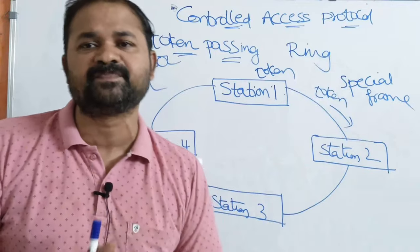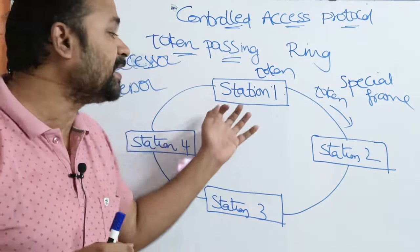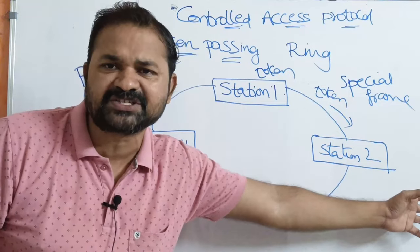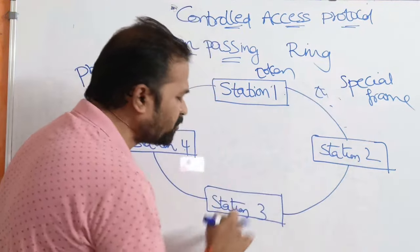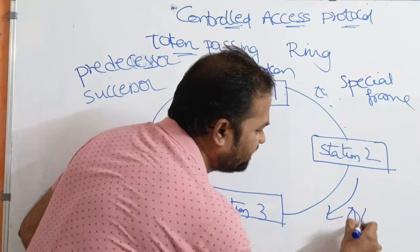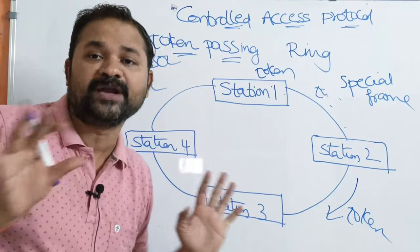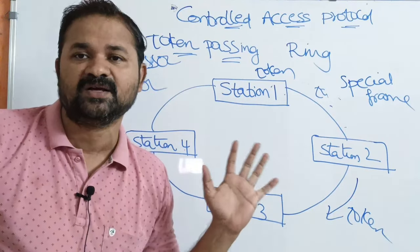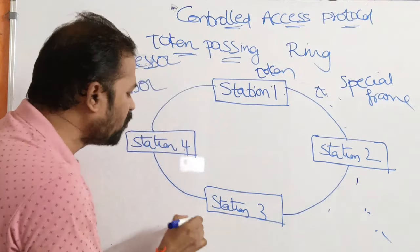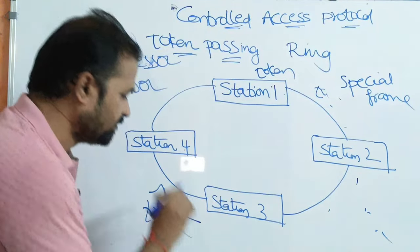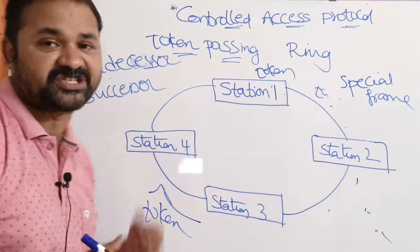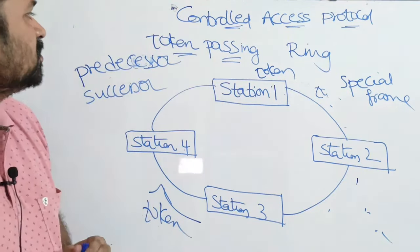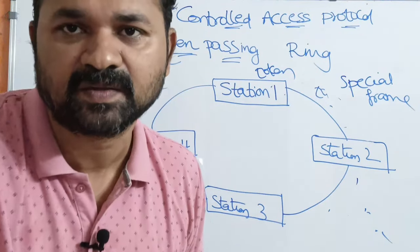After sending the data, the corresponding station forwards the token to its next station. If station two has data and the token, it sends the data and then sends the token to the next station. If a station has no data, it immediately forwards the token to its next station. This is how the token is circulated in the ring fashion. This is about token passing.